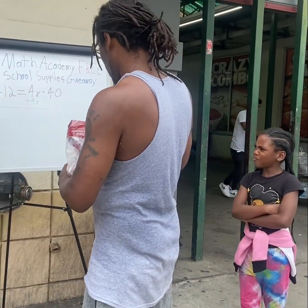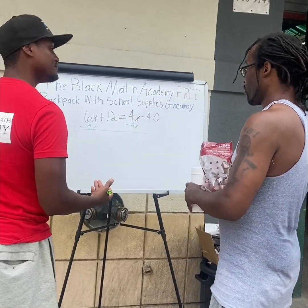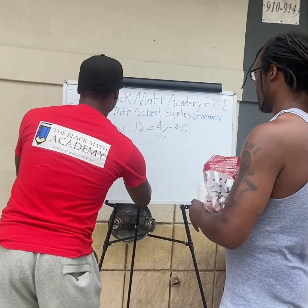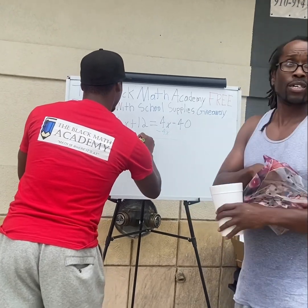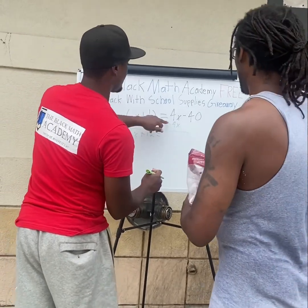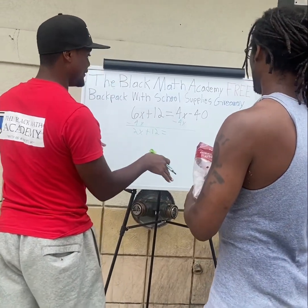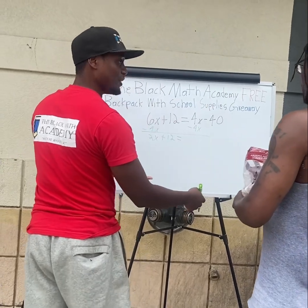6X minus 4X is 2X. Let's do it. 4X minus 4X. Negative 40, that just comes good.